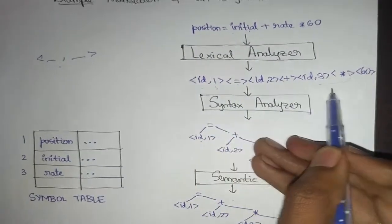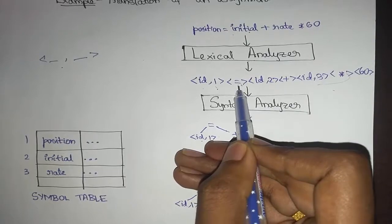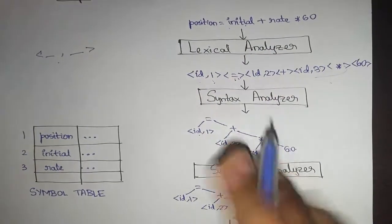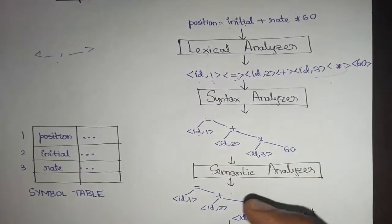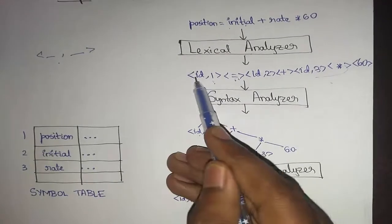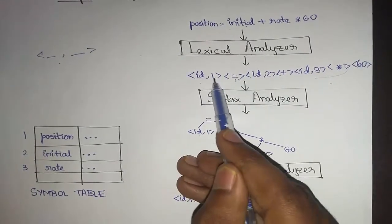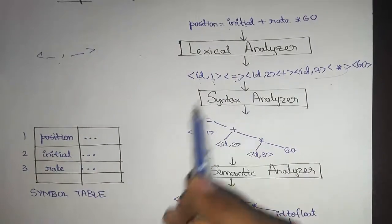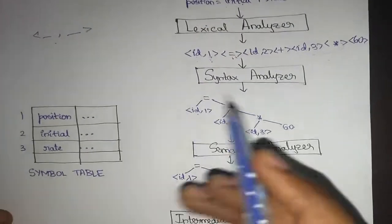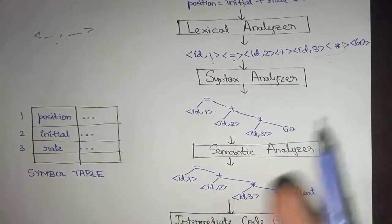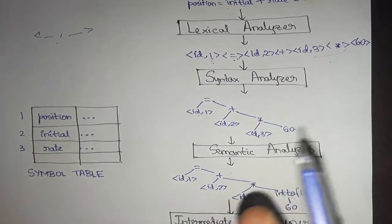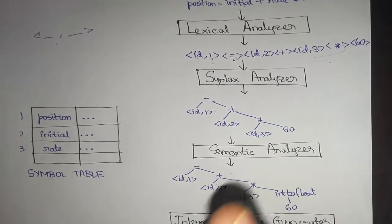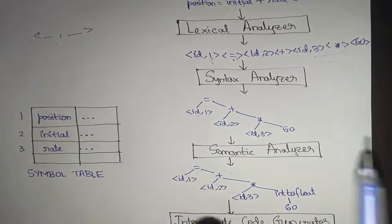This is the token stream where the operators are considered as an independent part of a token — the smallest part we can manage — and identifiers along with their attribute names are known as a single token. A lexeme is nothing but an instance of a token.